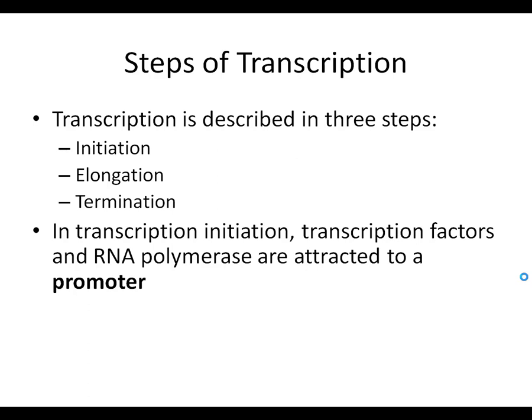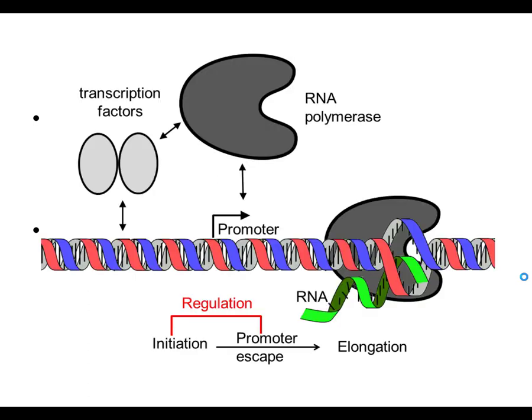In transcription, the initiation step involves proteins called transcription factors and another protein called RNA polymerase. Basically, what happens in the initiation step is that transcription factors bind to a sequence called the promoter, which is a DNA sequence located right next to the gene, usually at the 5' end of the gene. Transcription factors bind at the promoter and recruit RNA polymerase, which then elongates the mRNA.